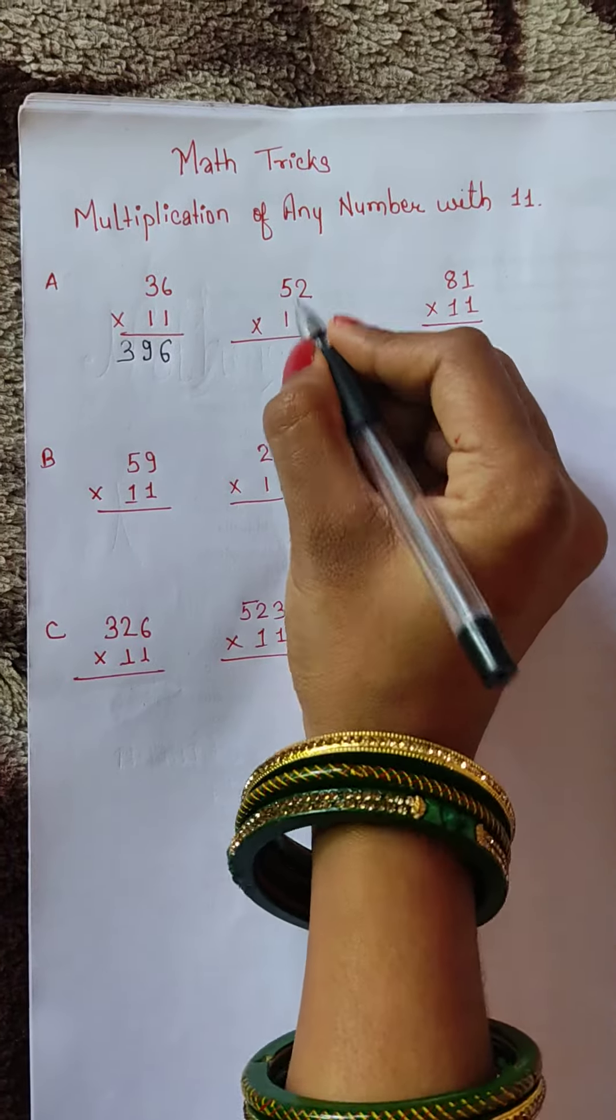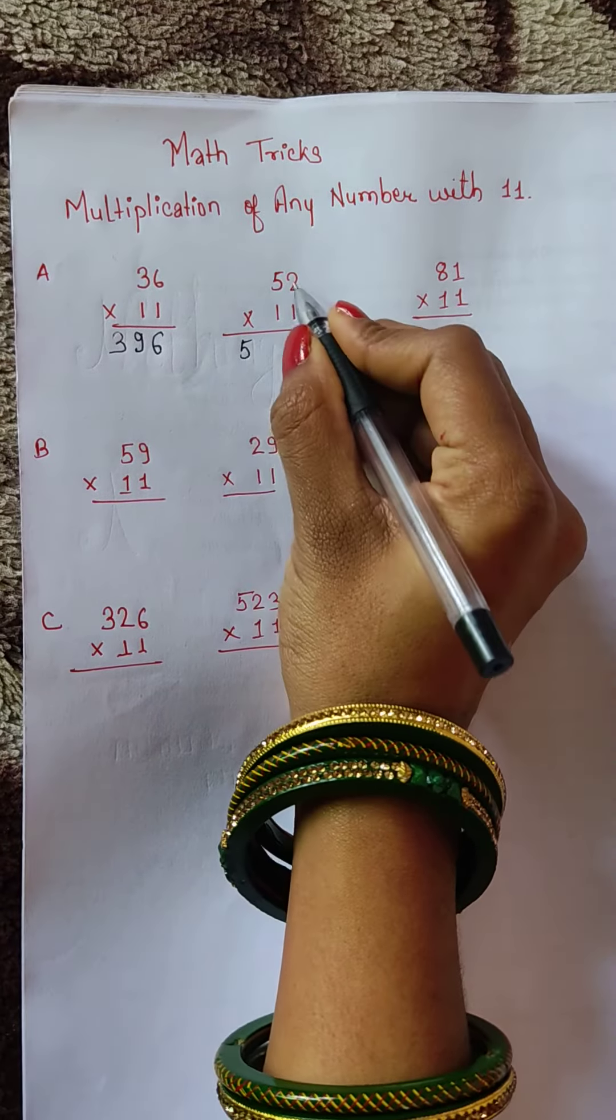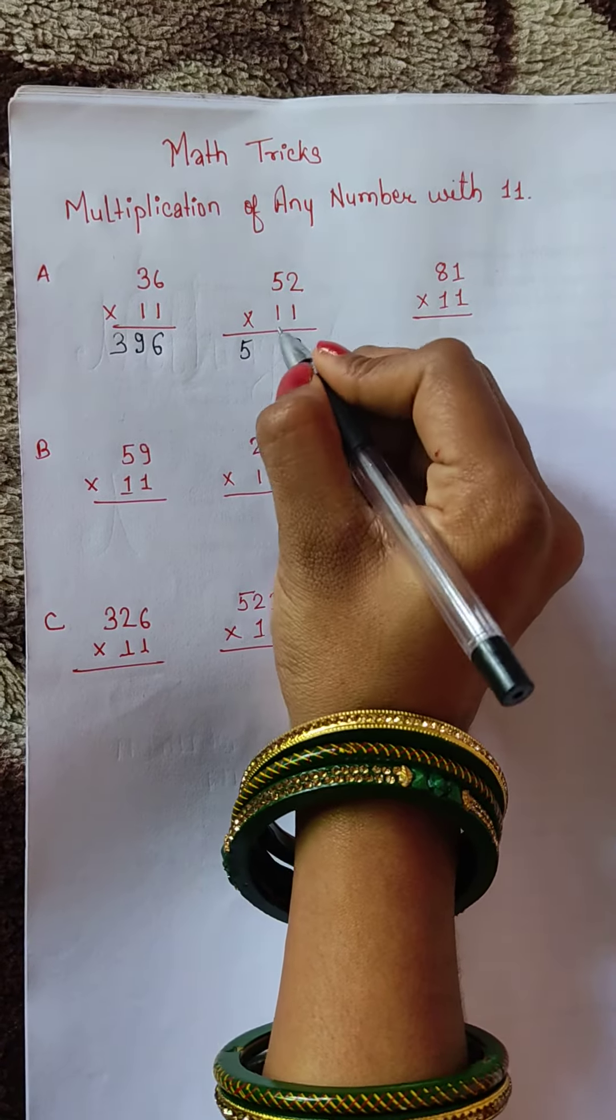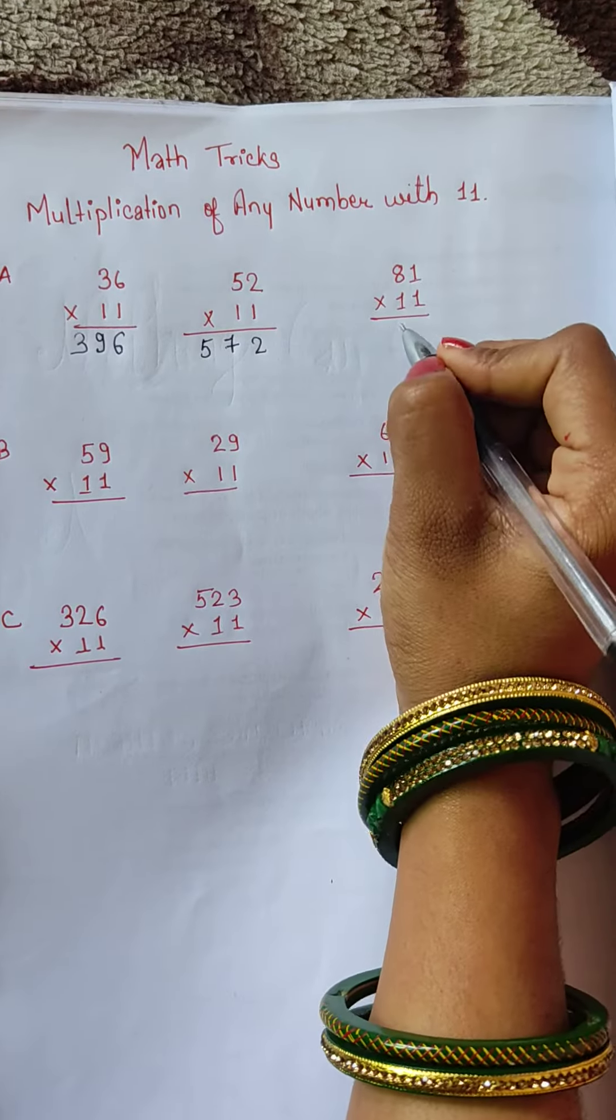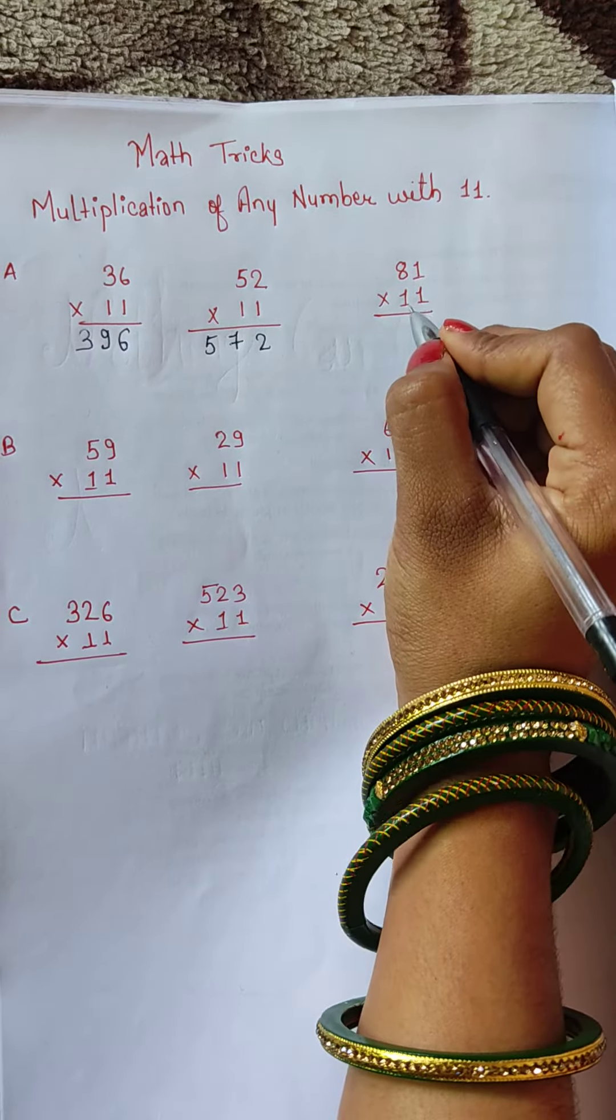For 52 times 11, write 5 here, 2 here, and 5 plus 2 equals 7, giving us 572. Try to find the answer of this question by yourself and comment.